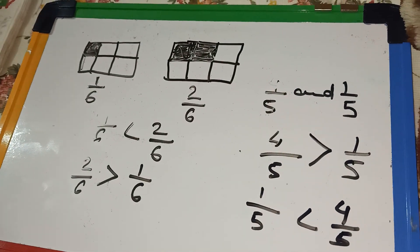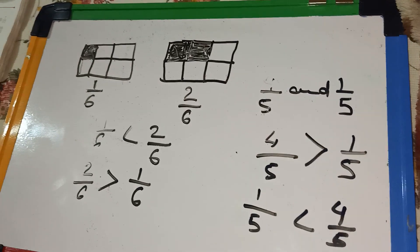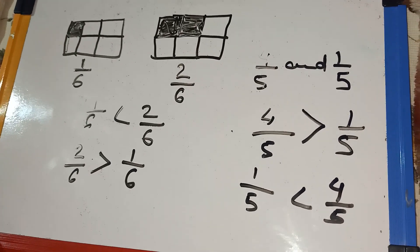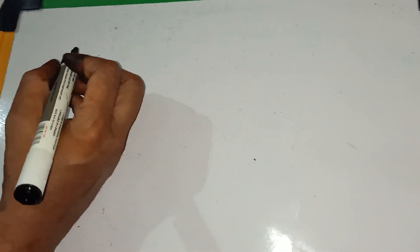So, again one more sum. I am taking that is the different denominator. Look carefully. You see one more sum. And in this sum, numerator is same and denominator is different. So, how can we do the sum?